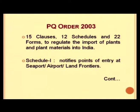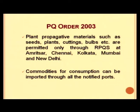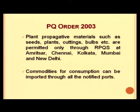Schedule 1 notifies the points of entry at seaports, airports, and land frontiers. Plant propagative materials such as seeds, plants, cuttings, and bulbs are permitted only through regional plant quarantine stations at Amritsar, Chennai, Kolkata, Mumbai, and New Delhi. Commodities for consumption can be imported through all notified ports.